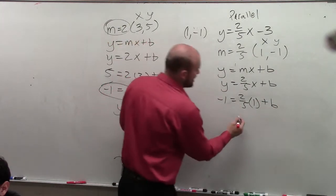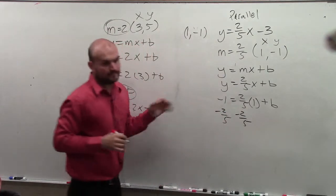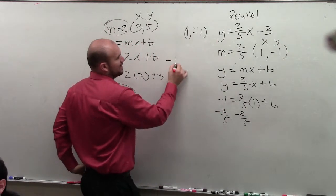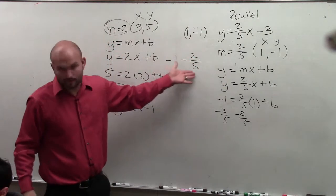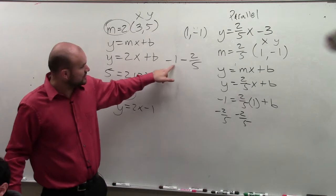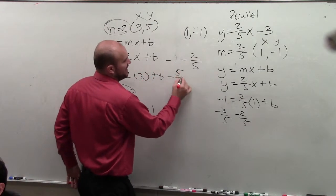Now we subtract 2 fifths. Now be very careful. When I have a negative 1 minus 2 fifths, you're trying to subtract a fraction from a whole number. So you've got to rewrite this as a denominator of 5. So that's really negative 5 fifths.